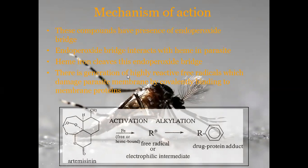After cleavage of the endoperoxide bridge, highly reactive free radicals are generated, which damage the parasite membrane. The parasite membrane is damaged by the generation of highly reactive free radicals, produced when heme iron cleaves the endoperoxide bridge.